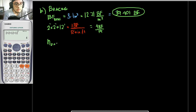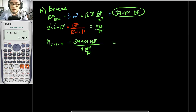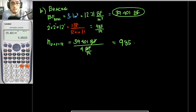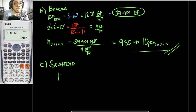The number of 2×2×12 is equal to 39.401 board feet divided by 4 board feet per piece, giving 9.85, which rounds up to 10 pieces of 2×2×12. That is our answer for the bracing. As for the scaffold, since our footing is resting in the ground, we don't need scaffold here — this is not applicable.